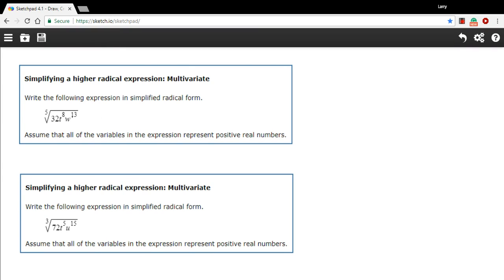In these problems, we're being asked to simplify some higher radicals. In this case, a fifth root down here. We've got a third root to take, and we've got multiple variables inside here.